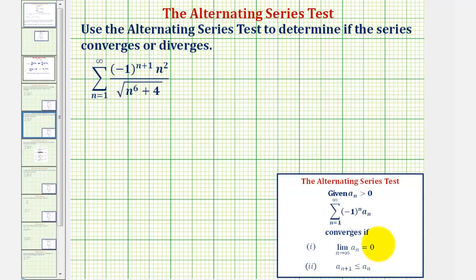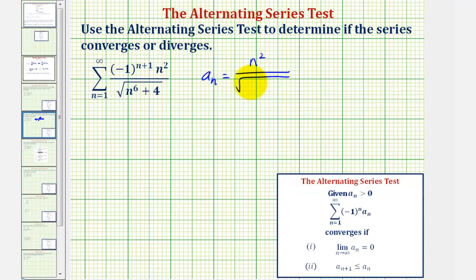Looking at our series, notice how the non-alternating part a sub n would be equal to n squared divided by the square root of n to the sixth plus four. Notice how a sub n is greater than zero for all values of n.